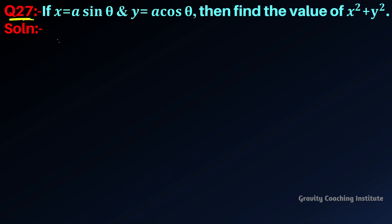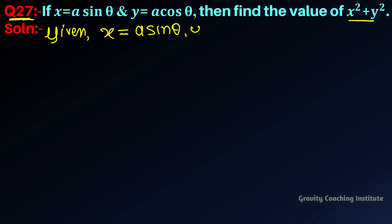Question number 27: if x equals a sine theta and y equals a cos theta, then find the value of x square plus y square. These questions may be given as x equal to a sine theta or y equal to a cos theta, and find the value of x square plus y square. These questions come in different ways.